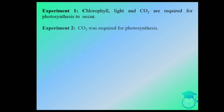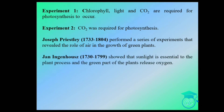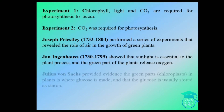The experiment showing that carbon dioxide was required for photosynthesis was done by Joseph Priestley — he performed a series of experiments and revealed the role of air in the growth of green plants. Jan Ignatius showed that sunlight is essential for the plant process and that the green part of the plant releases oxygen.